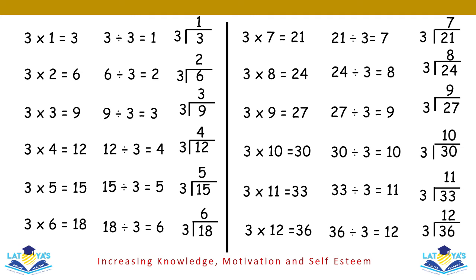Three eights are twenty-four; three into twenty-four, eight. Three nines are twenty-seven; three into twenty-seven, nine. Three tens are thirty; three into thirty, ten. Three elevens are thirty-three; three into thirty-three, eleven. Three twelves are thirty-six; three into thirty-six, twelve.